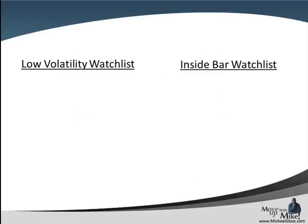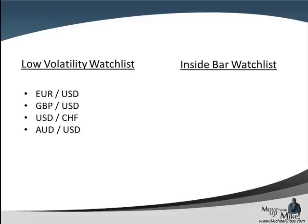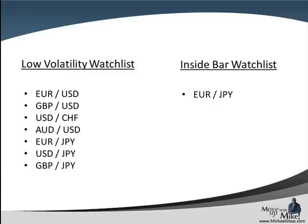Taking a look at our watch lists. On the low volatility watch list, we have: euro dollar, pound dollar, dollar franc, Aussie dollar, euro yen, dollar yen, and pound yen. On our inside bar watch list, we have the euro yen and the New Zealand yen.